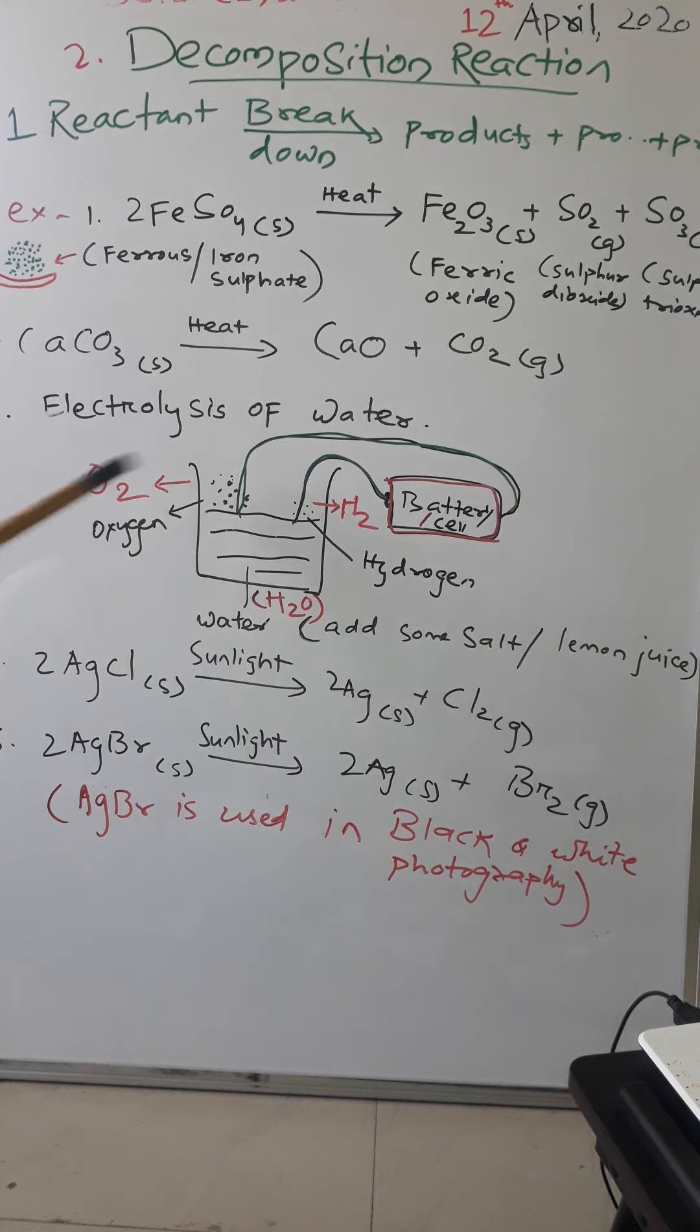Here the water decomposes into hydrogen and oxygen. Next two other examples are there. That is AgCl or silver chloride. If you keep it in sunlight then it decomposes to silver and chlorine.